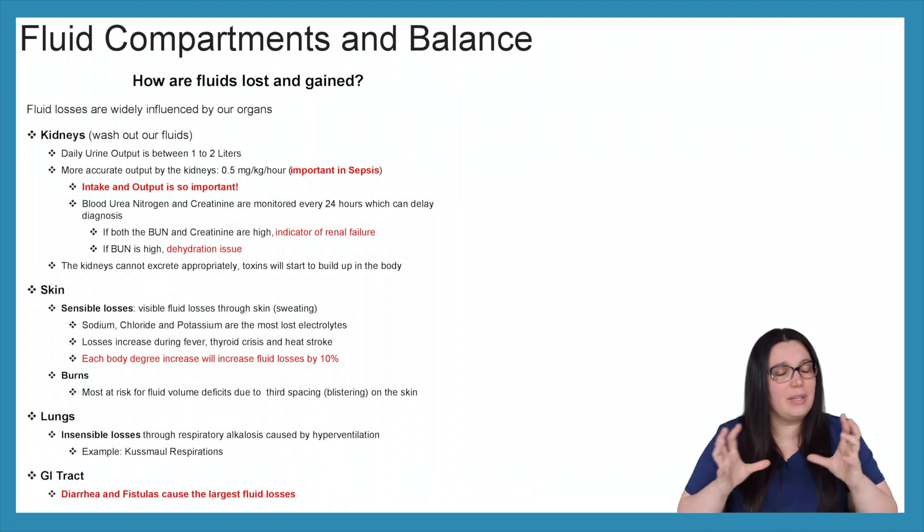So something that's really important to note when you're taking your NCLEX is that with each body degree increase, we increase fluid losses by 10%. So if you have a patient that's normally 98.6 and now they're 99.6, we've just lost 10% of our fluid loss. That's insane. That's a lot of fluid loss. So you can imagine if we go up five degrees, we're losing 50% fluid loss. That can be massively detrimental to our patients.